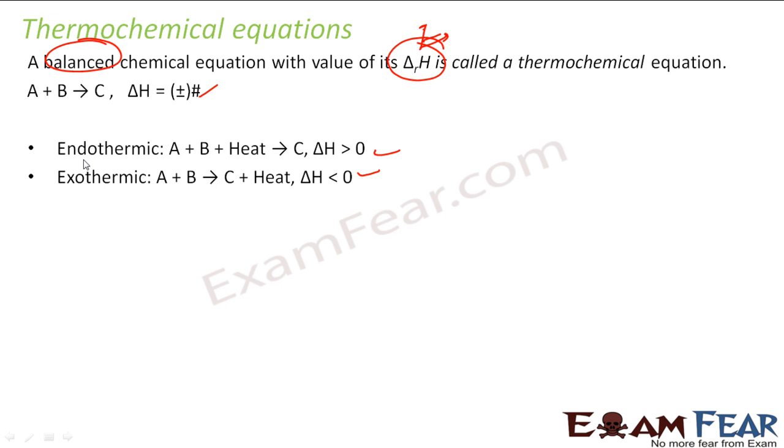We can take examples of thermochemical equations. For example, hydrogen gas plus oxygen gas gives H2O, and delta H will be minus 286 kilojoules. If you multiply everything by 2, delta H becomes minus 572 kilojoules.